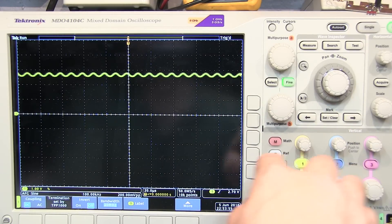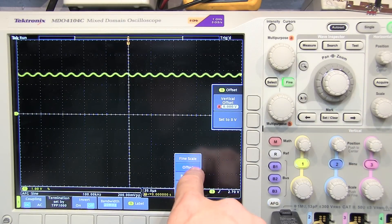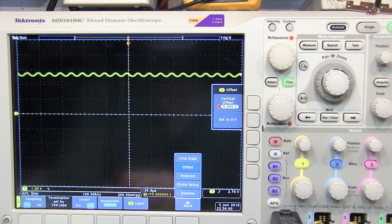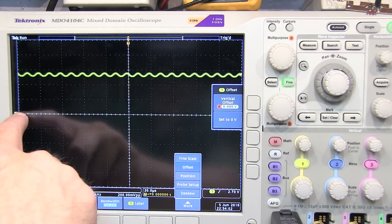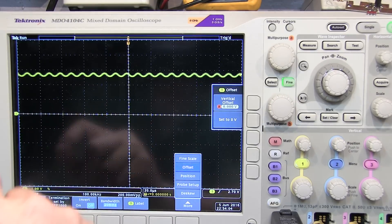Now in this scope, in the vertical menu, I can go here to select offset. Now what offset will do is change where the reference level is for that channel.